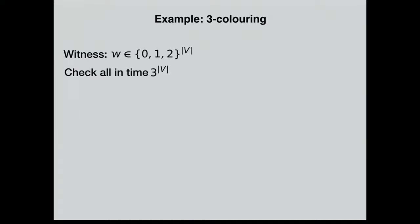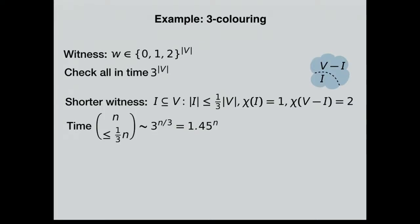Here's an example. So 3-coloring, for k equals 3. Obviously I can solve that by looking for all witnesses. The witnesses are vectors of this length with these values, so I can do that in time 3 to the n. And once I have the witness, it's a polynomial time computation — I can check for every edge that its endpoints are multi-colored. But if that's okay, then why is not the following okay as well? It would suffice for me as a witness to see a set i, an independent set.